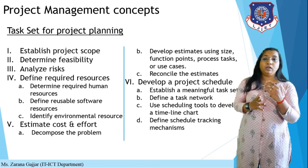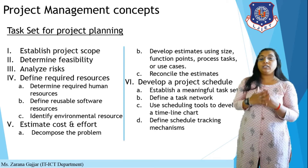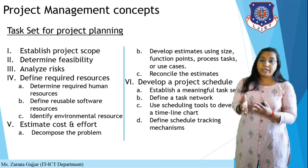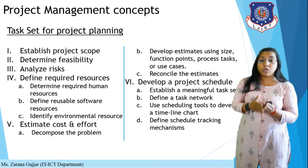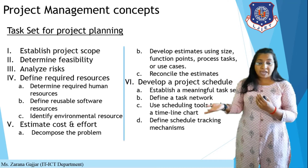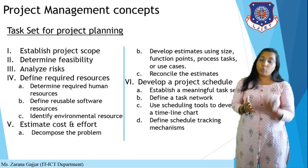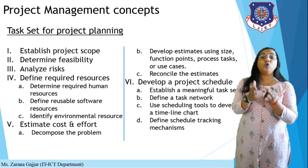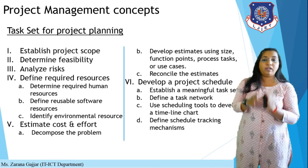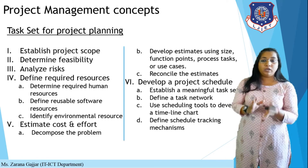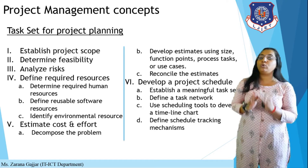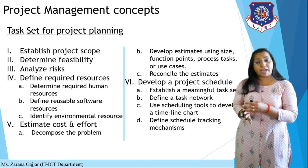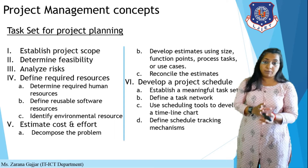The fourth task is to define required resources. You need to determine the required human resources — who is going to design it, who will implement it, who is your QA/QC team, and who is the maintenance team. Any person who directly or indirectly affects your software product is a human resource. This includes stakeholders, end users, and customers.